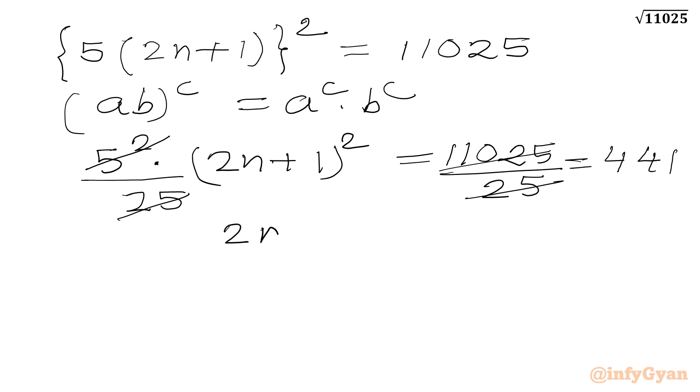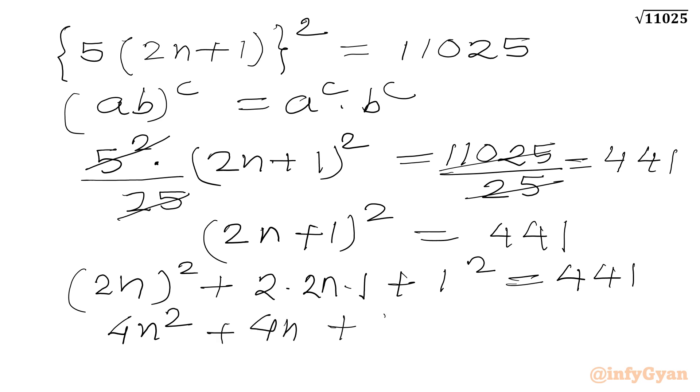Now we can write it is 2n plus 1 whole square equal to 441. Now a plus b whole square we will apply. We can write 2n whole square plus 2 times 2n times 1 plus 1 square equal to 441. Or we can write 4n square plus 4n plus 1 equal to 441.